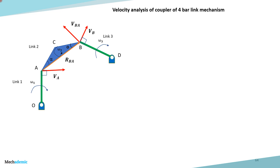We will go through the complete velocity analysis of a coupler of a 4-bar link mechanism. Points O and D are the two pin joints which are fixed, so OD forms the fixed link. Link OA rotates with angular velocity omega_1, creating tangential velocity VA at A, perpendicular to link OA. Link BD also rotates at angular velocity omega_3, creating velocity VB perpendicular to link BD. Link AB is the coupler link in the shape of a triangle, with apex at point C. The angle at C is alpha and theta respectively. Link 1 is OA, link 2 is ABC, and link 3 is BD.